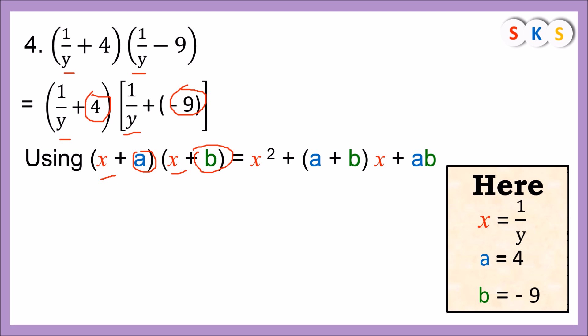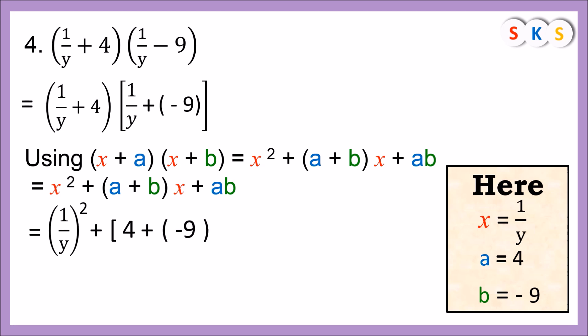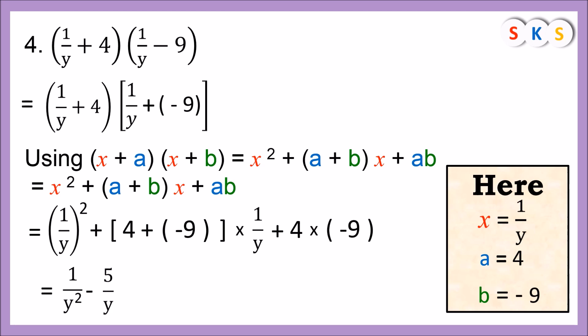Substituting the values: (1/y)² + (4 + (−9)) × (1/y) + 4 × (−9). The square of 1 is 1 and square of y is y², so it is 1/y². Then 4 − 9 = −5, and −5 × (1/y) = −5/y. And 4 × (−9) = −36. Therefore (1/y + 4)(1/y − 9) = 1/y² − 5/y − 36.